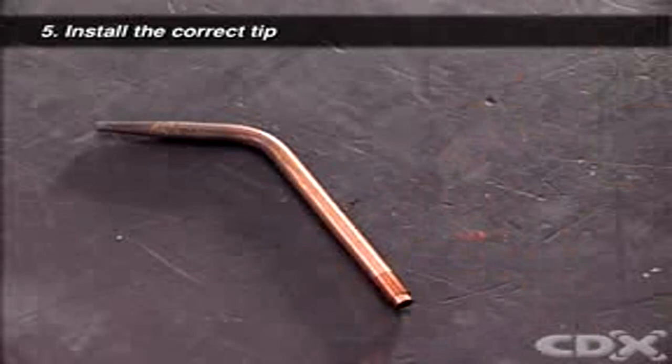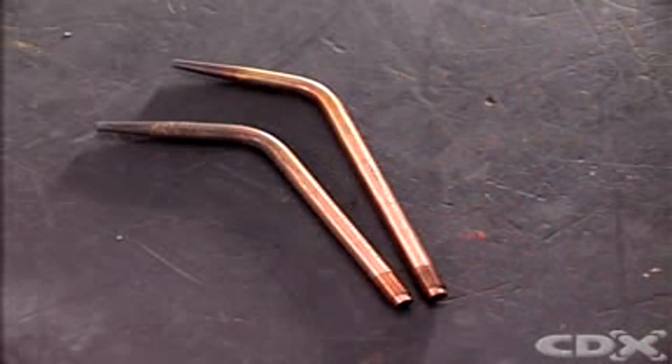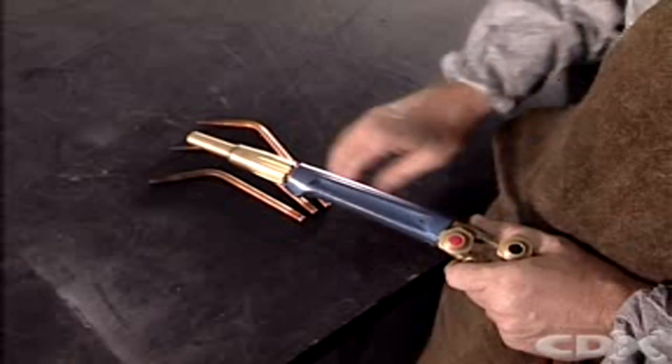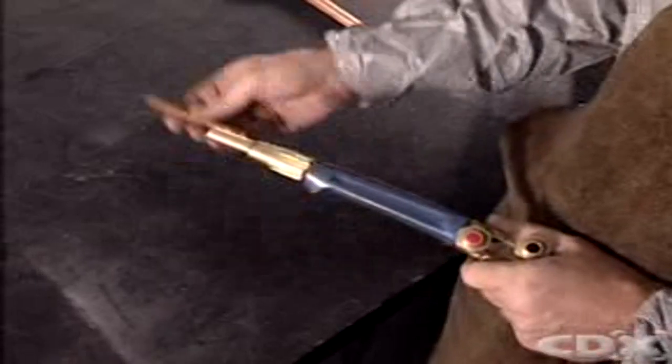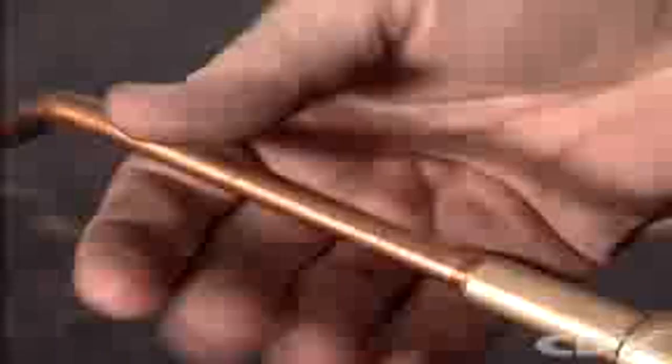Welding tips come in sizes that are stamped with a number. Number one is the smallest tip. The larger the number, the larger the tip and the greater the heat that it will provide. Select the tip size suitable for the heating task and screw it onto the end of the torch handle.